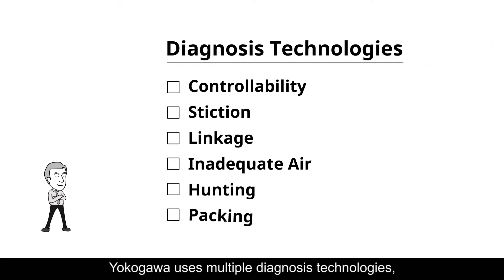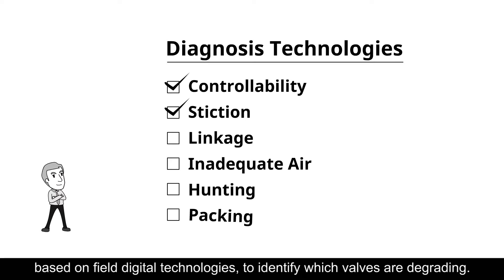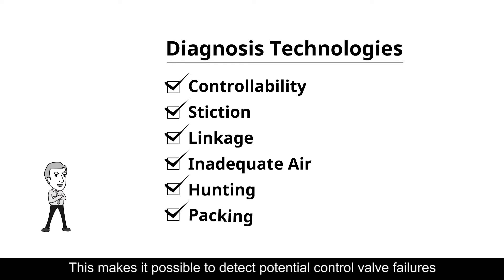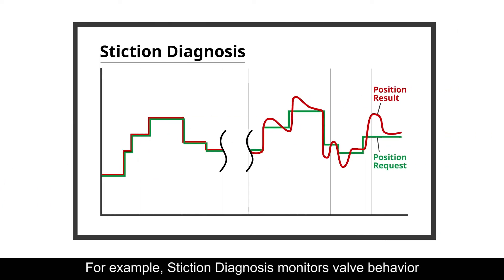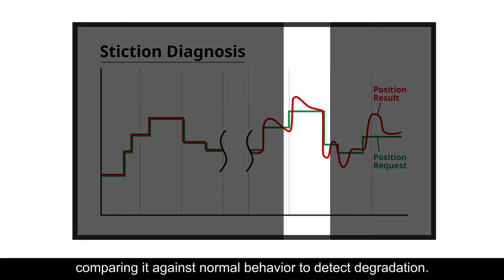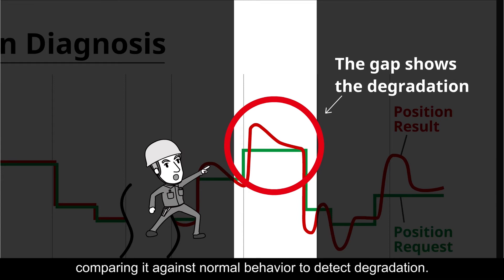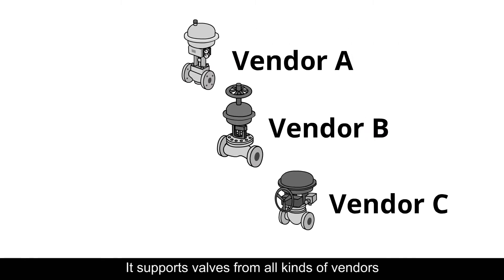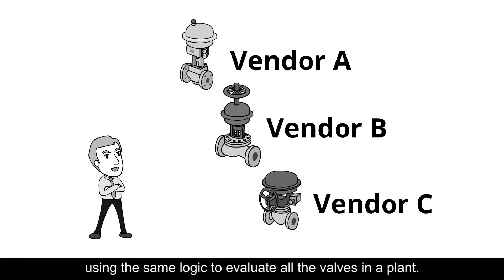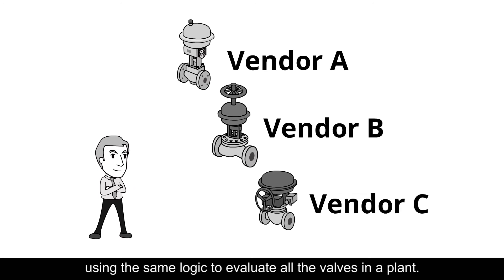Yokogawa uses multiple diagnosis technologies based on field digital technologies to identify which valves are degrading. This makes it possible to detect potential control valve failures before they happen. For example, stiction diagnosis monitors valve behavior, comparing it against normal behavior to detect degradation. It supports valves from all kinds of vendors, using the same logic to evaluate all the valves in a plant.